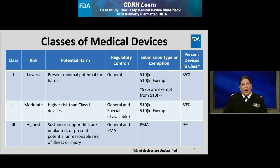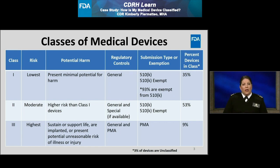Before I begin the case study, I'd like to review a few points made in the companion module. First, medical devices are classified based on risk. Medical devices may be classified as class 1, class 2, or class 3. Second, the risk of the device determines the extent of regulatory controls. And lastly, there may be an applicable premarket submission type for a device unless exempt. The table displayed on this slide provides an overview of the medical device classes and their applicable regulatory requirements.